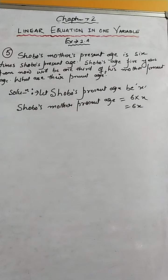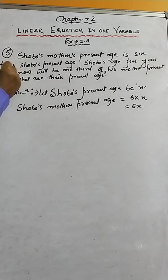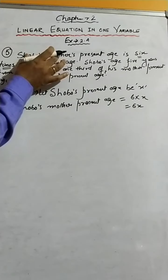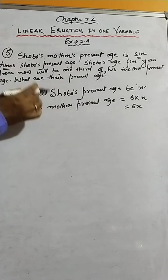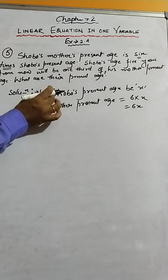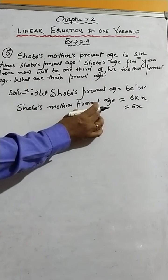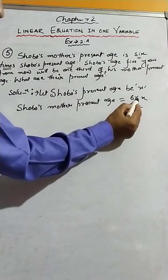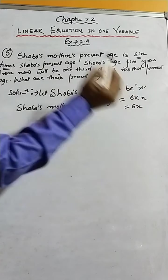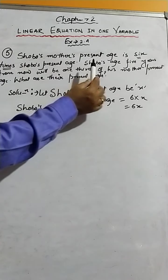To summarize: the first sentence says Shobu's mother's present age is six times Shobu's present age. So we let Shobu's present age be X, which gives us Shobu's mother's present age as six times X, that is six X.